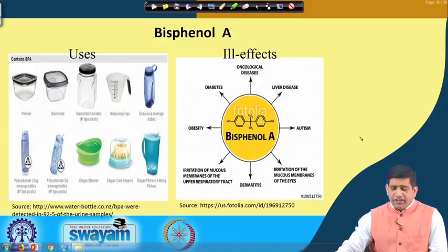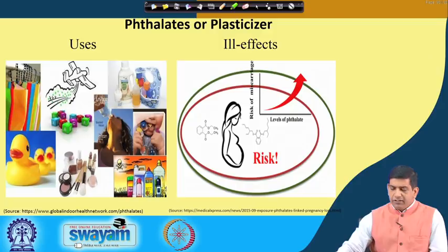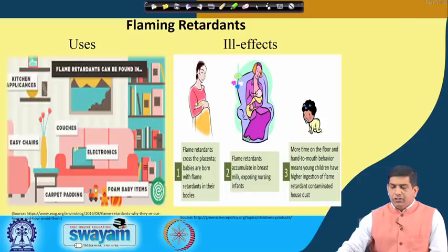Phthalates are used in different kinds of materials — toys, cosmetics, bottles, and different containers. The risk, as discussed earlier, involves the reproductive system. As the level of phthalates goes up, the risk of miscarriage increases, so you do not want too much exposure to phthalates. Flame retardants are essentially used to retard flame, as the name suggests — anything which gets heated up, where we are worried about things catching fire, has flame retardants.